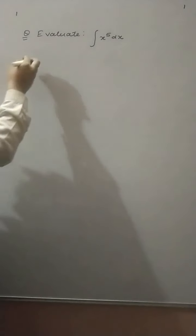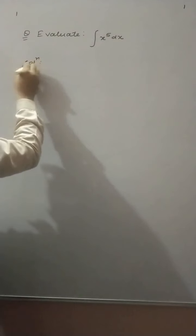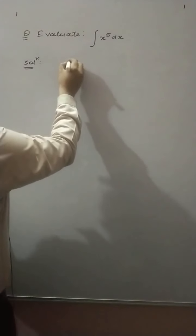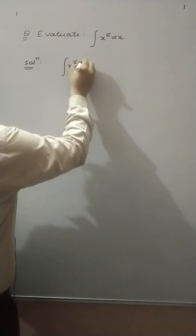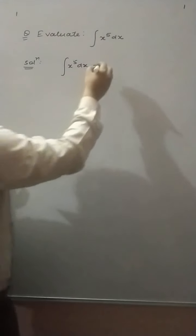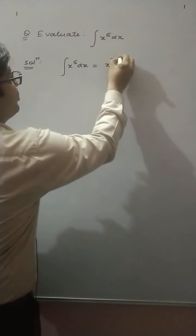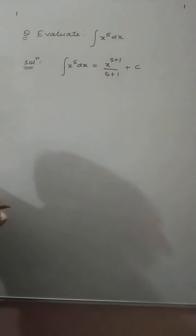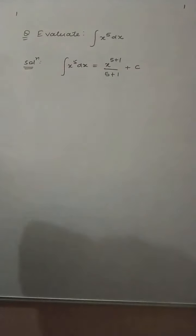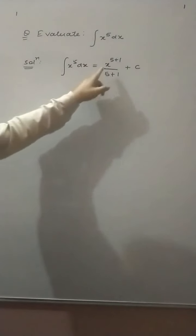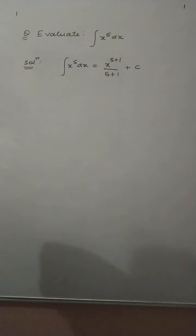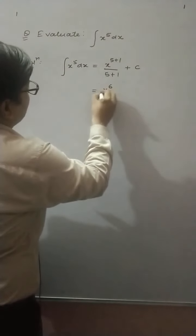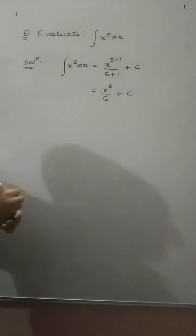How will you find the integral of x raised to power 5? According to the formula for x raised to power n: the integral of x raised to power 5 is x raised to power 5 plus 1 divided by 5 plus 1, plus C. As we know, the integral of x raised to power n is x raised to power n plus 1 divided by n plus 1, plus C. So you get x raised to power 6 divided by 6, plus C.